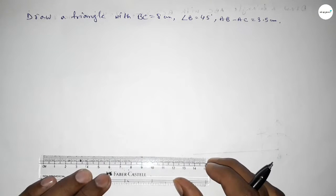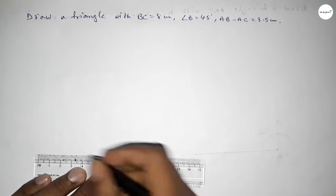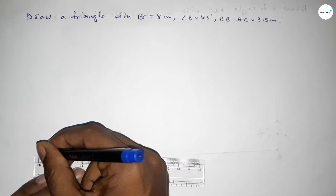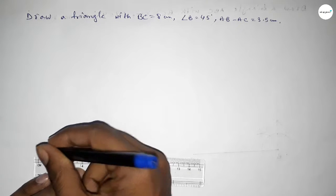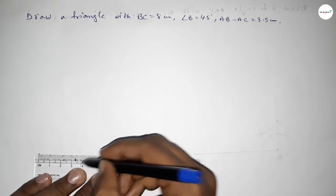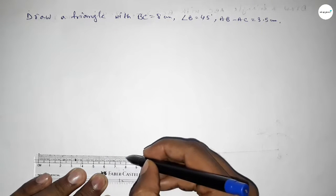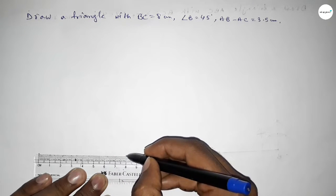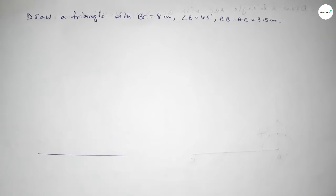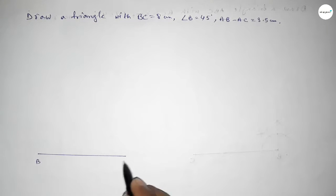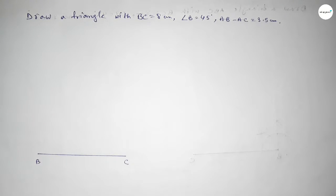First of all, we have to draw a straight line of length 8 centimeters. This is 8 centimeters, taking here point B and here point C. Now we have to draw a 90 degree angle at point B.